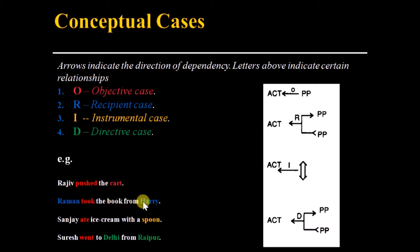Raman took the book from Harry. In this case, Harry is the source. Raman is the receiver. So this is the recipient case.